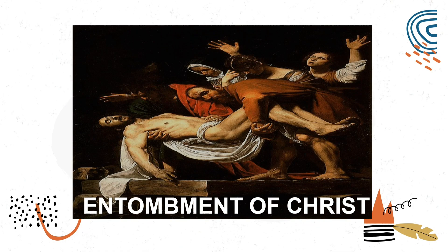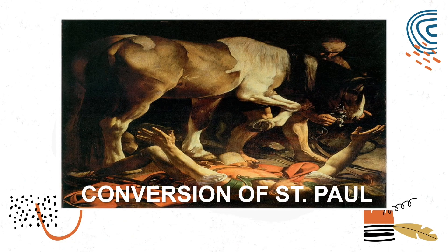The Entombment of Christ consists of a tightly compact figurative group of six people including dead Christ. The upper body of Christ is supported by John the Evangelist or Joseph of Arimathea, while the lower half is supported by Saint Nicodemus who removed the nails from Christ's feet on the cross. Three women — the Virgin Mary, Mary Magdalene, and Mary of Cleopas — are also present. The Conversion of St. Paul records the moment when Saul of Tarsus, on his way to Damascus to annihilate the Christian community, was struck blind by a light from heaven and claims to have seen Christ during his vision.